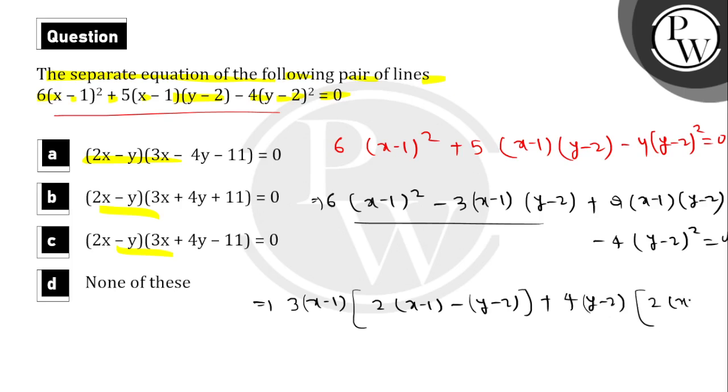Factoring out the common terms: from the first pair we get 3(x-1)[2(x-1)-(y-2)], and from the second pair 4(y-2)[(x-1)+...]. Taking the common factor, we get: [2(x-1)-(y-2)] times [(x-1)+4(y-2)] = 0. This simplifies to (2x-1-y+2)(x-1+4y-8) = 0.